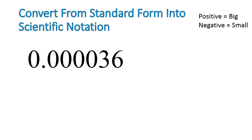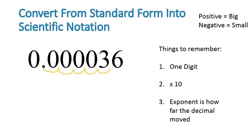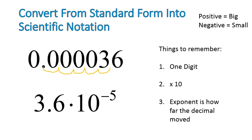Let's do an example with a small number. Big numbers give positive exponents, small numbers give negative exponents. We move the decimal so there's one digit on the left, write it times 10 to the power of something, and the exponent is how far the decimal moves and in which direction. This small number moves 5 places, so it would be times 10 to the power of negative 5.